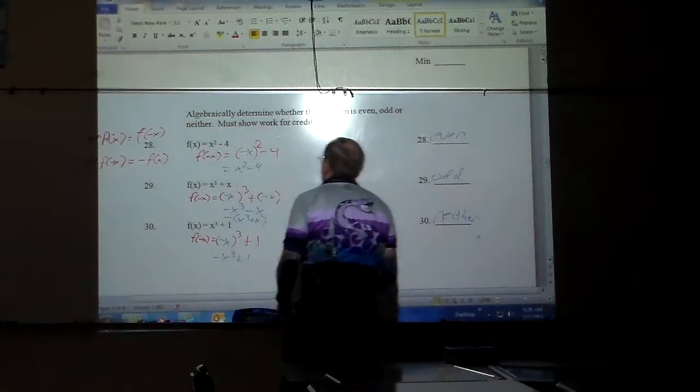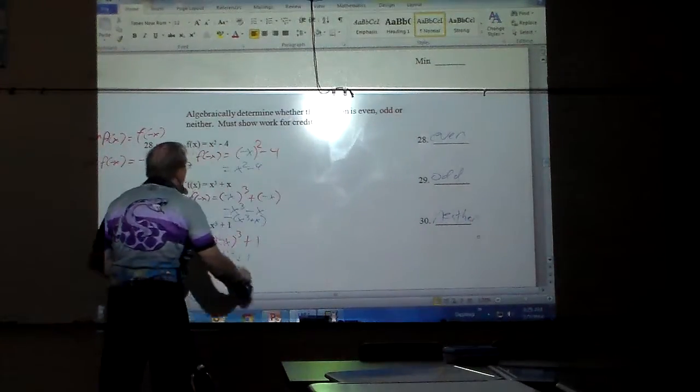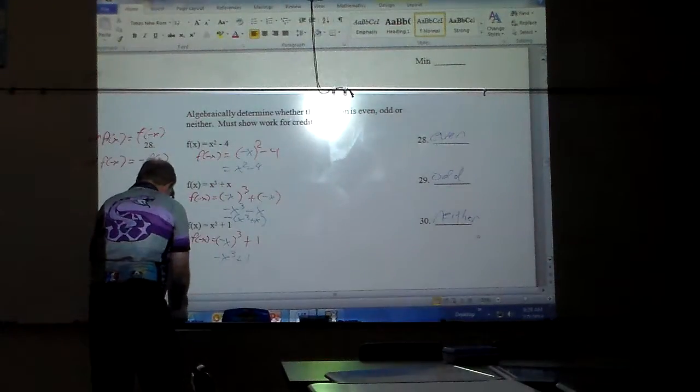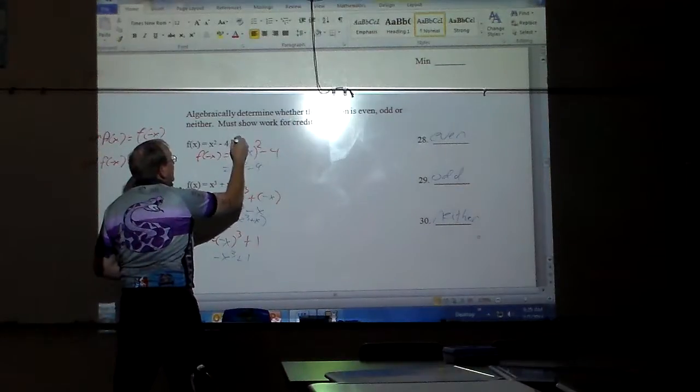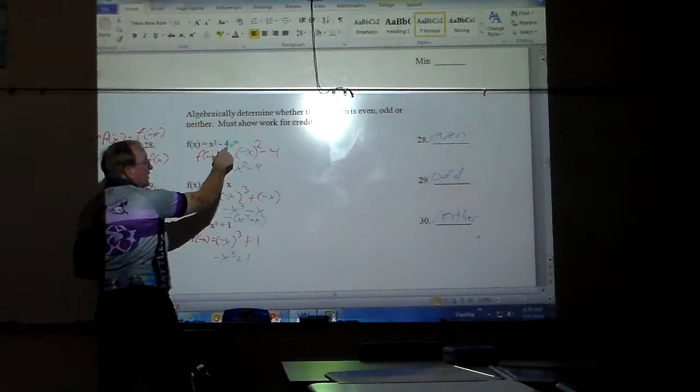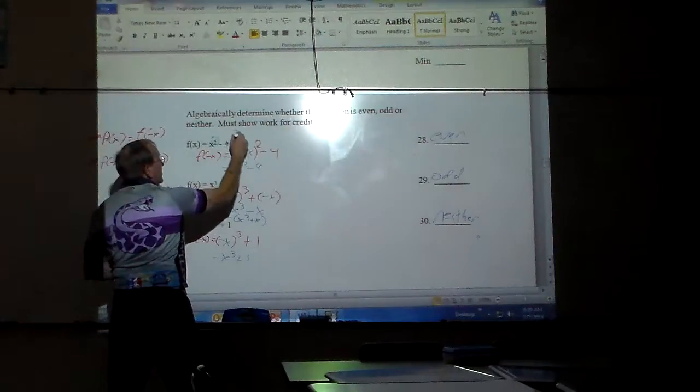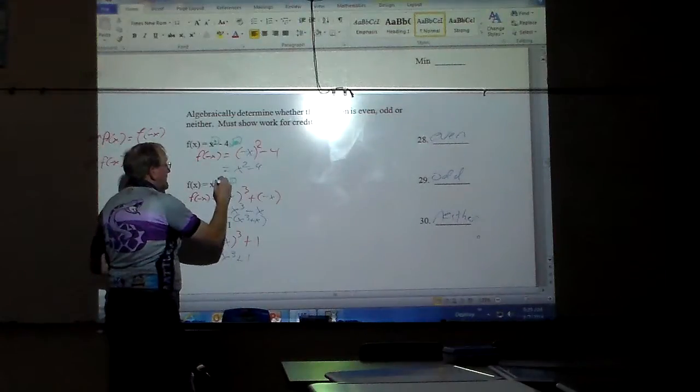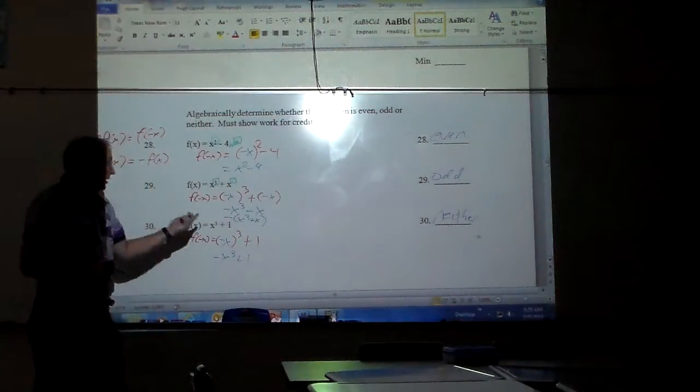Also, there's a nice little shortcut. If you look up here, four is the same thing as, if I had x to the zero power right there, that's one, and one times that is still negative four. Notice, the exponents here were all what? Even. Here's a one. What do you notice about all the exponents there? They are odd.